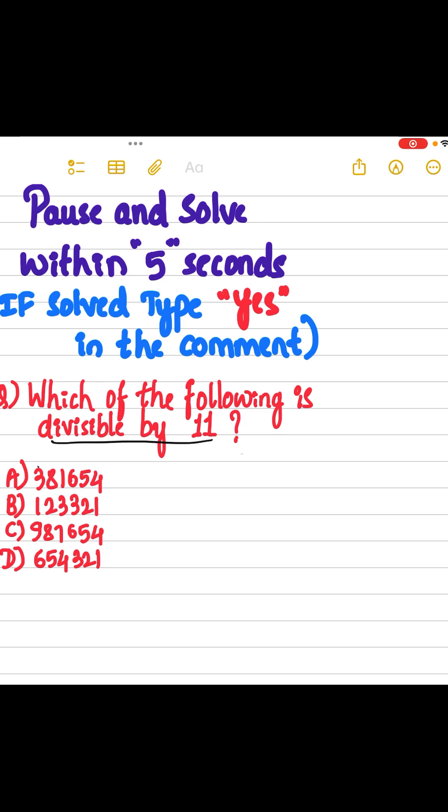The short trick is, take the alternative digit sum and subtract it. If the result is 0 or 11, then it is divisible by 11, otherwise not.